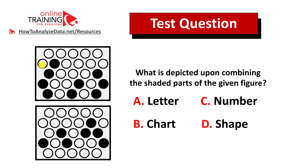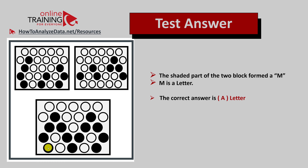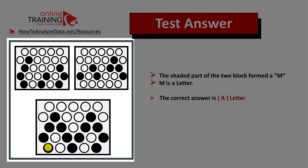Did you figure out the answer? Upon combining the two rectangles, M can be formed — M is the letter. The trick is that typically during the test you don't have access to paper and can't draw it out or use any other tools. So you have to visualize this in your memory, and that's the tricky part about this question. It seems easy once you know the answer.